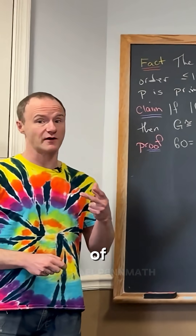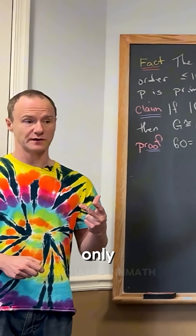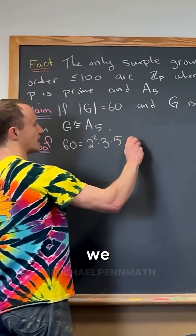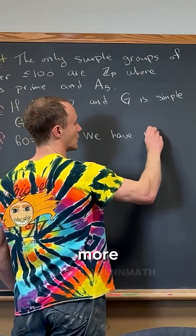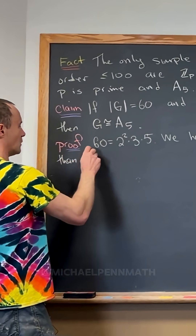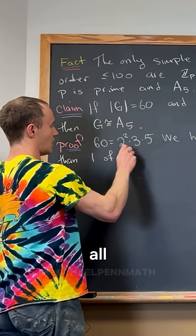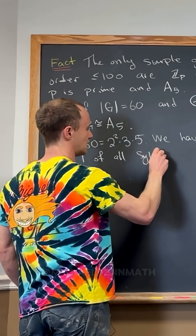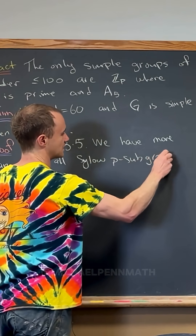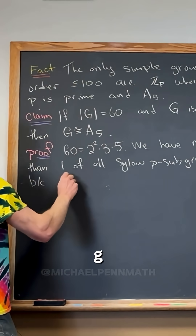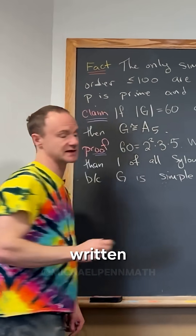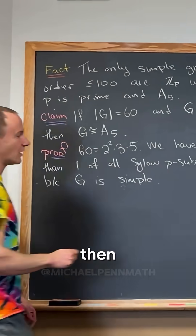We've got more than one of all of them, because otherwise, if you only have one Sylow subgroup, it's normal — so G can't be simple. We have more than one of all Sylow P subgroups because G is simple. So we've got that written down.